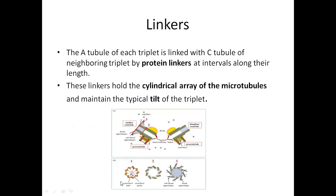The nine triplets are connected to each other by protein linkers. These protein linkers not only connect them with each other but also bring about the required tilt to position the triplets around the circumference of the imaginary cylinder. Not only the nine triplets, but the mother and daughter centrioles are also connected by interlinking proteins.